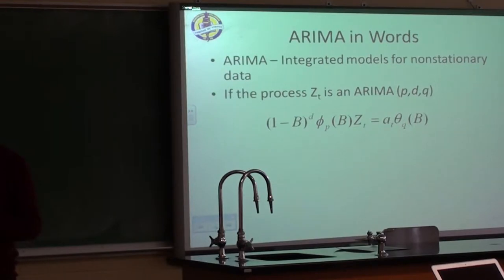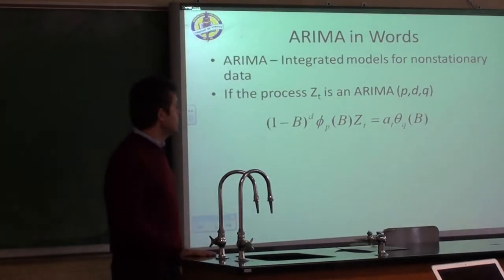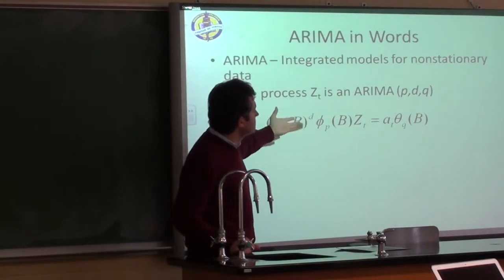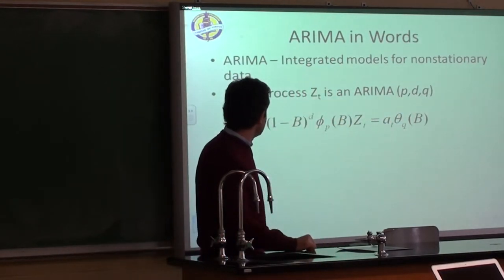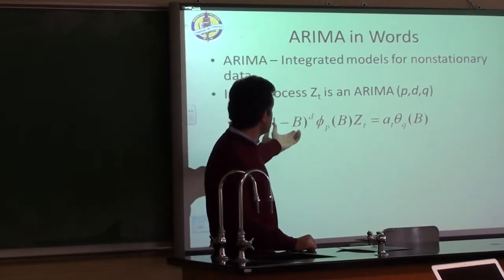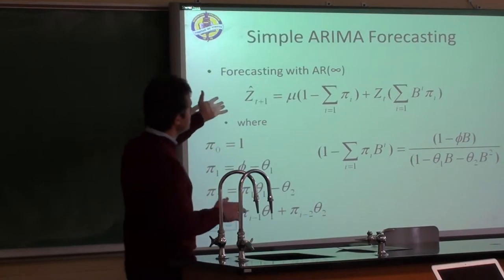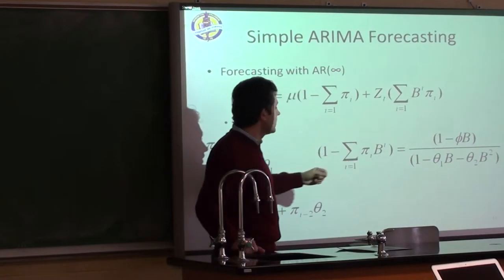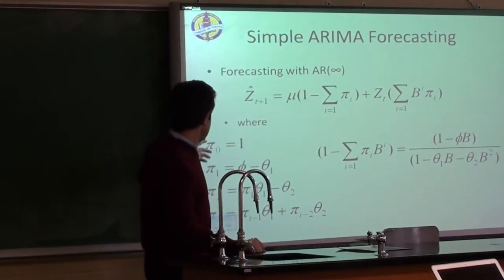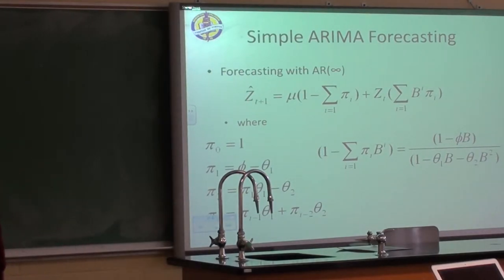The ARIMA model — most people recognize it — is a time series model with autoregressive order P, differencing order D, and moving average order Q. That is the representation with the backshift operator. Simple ARIMA forecasting is done by representing the autoregressive infinite form. Using this equation we can find the pi parameters, and the model depends on theta one and theta two.